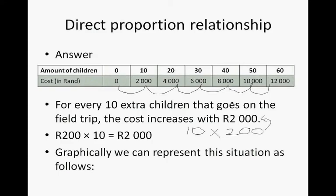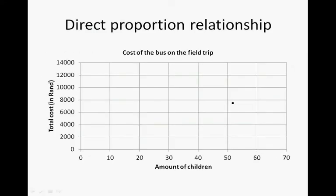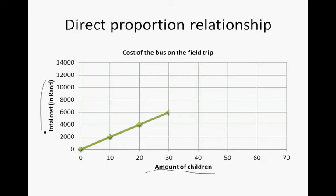This is how we will represent the situation graphically. Remember, we need to have a heading. The amount of children is the independent variable, so that goes on the horizontal axis. The total cost is the dependent variable, so that goes on the vertical axis. And this is the graph.